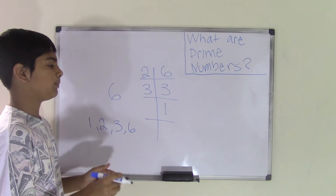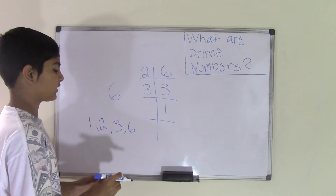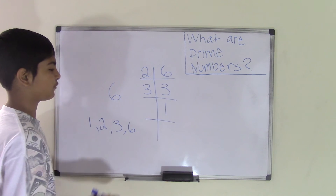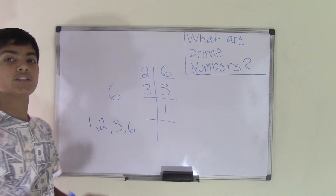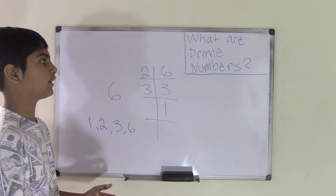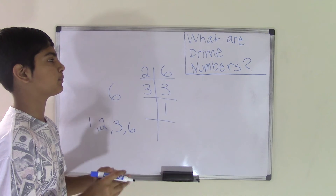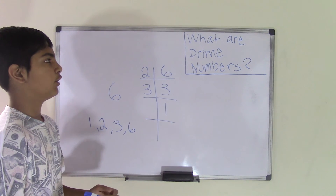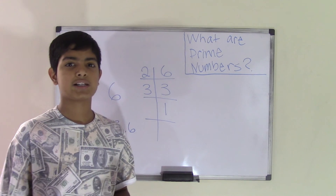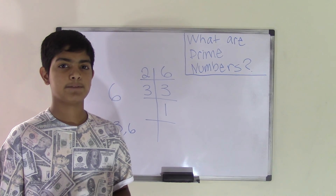So now we have 4 factors total for 6. Remember, a prime number can only have factors 1 and itself. This time we have 2 other factors, so 6 is not a prime number. This is how you identify if a number is prime or not. Hope you got all the main facts — we'll see you guys next time, bye!